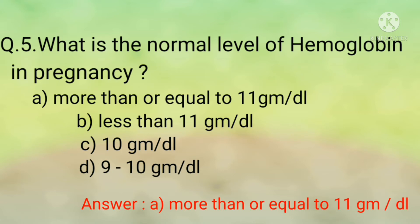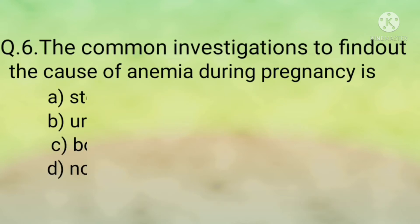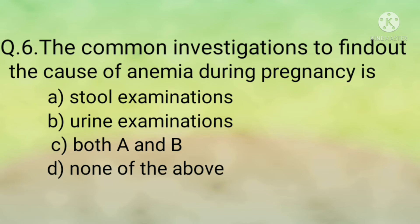The classification of anemia during pregnancy based on hemoglobin levels according to WHO 2011 is as follows: mild anemia is hemoglobin 10.0 to 10.9 gram per deciliter; moderate is 7.0 to 9.9 gram per deciliter; severe is less than 7.0 gram per deciliter; and severe anemia in pregnancy is hemoglobin less than or equal to 10 gram per deciliter.